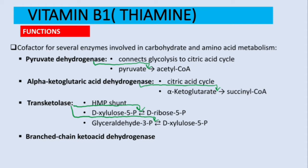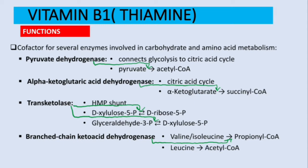The last enzyme, branched-chain ketoacid dehydrogenase, acts on the conversion of branched-chain ketoacids. For example, valine and isoleucine are converted to propionyl-CoA, and leucine is converted to acetyl-CoA.